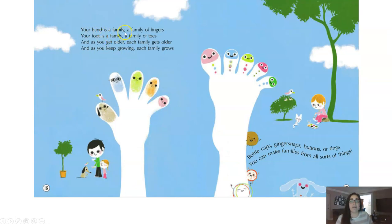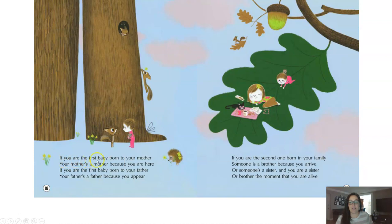Your hand is a family, a family of fingers. Your foot is a family, a family of toes. And as you get older, each family gets older, and as you keep growing, each family grows. Bottle caps, ginger snaps, buttons or rings — you can make families from all sorts of things. If you are the first baby born to your mother, your mother's a mother because you are here. If you are the first baby born to your father, your father's a father because you appear. If you are the second one born in your family, someone is a brother because you arrive. Or someone's a sister and you are a sister, or brother the moment that you are alive.